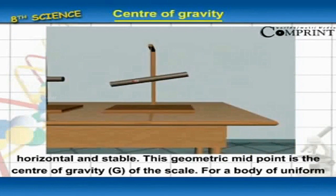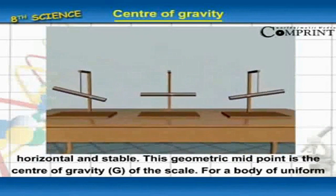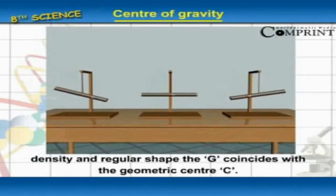This geometric midpoint is the center of gravity G of the scale. For a body of uniform density and regular shape, the G coincides with the geometric center C.